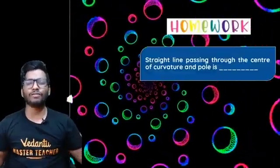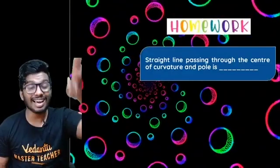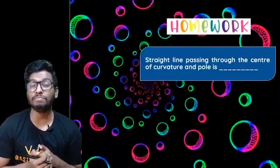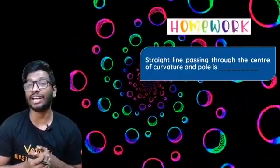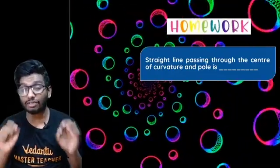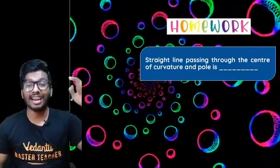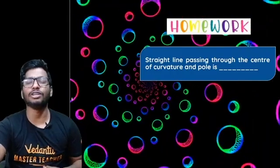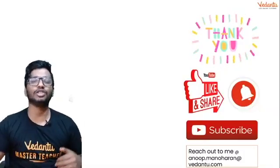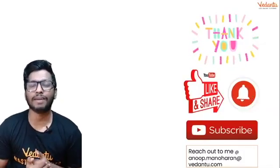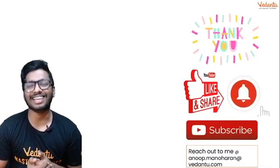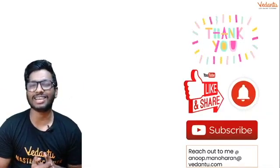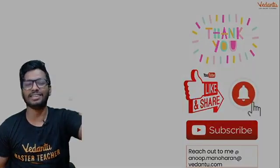Here is your homework for today — let me know the answer in the comment section below. The question is: What is the straight line passing through the center of curvature and the pole called? Let me know the answer in the comments. I hope you enjoyed today's session — leave a like, subscribe to the channel, be a part of the squad, and take care of yourself. Stay safe. Until the next one, take care, guys. This is Haram signing off. Bye-bye!